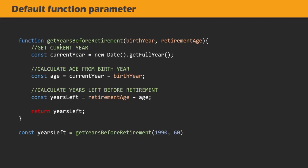When we call this 'getYearsBeforeRetirement' function, we pass the value 1990 for the birth year parameter and 60 for the retirement age parameter. So 1990 is assigned to birth year and 60 is assigned to retirement age, and then those values are used inside the function for doing the calculation. This is how, using function parameters, we can pass a value to a function.